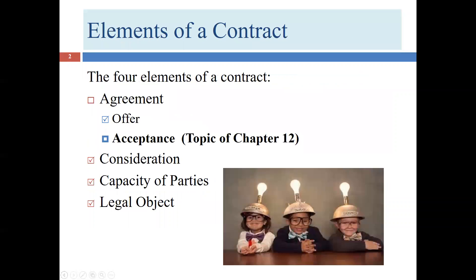But before we do that, let's backtrack and think about where we are overall in the structure of contract law. We know that there are four elements to a contract: agreement, consideration, capacity, and legal object. Agreement itself has two elements: offer and acceptance. We talked about agreement in Chapter 9, consideration in Chapter 10, and capacity and legal object in Chapter 11. In Chapter 12, we're reopening the topic of acceptance and digging a little deeper into it.